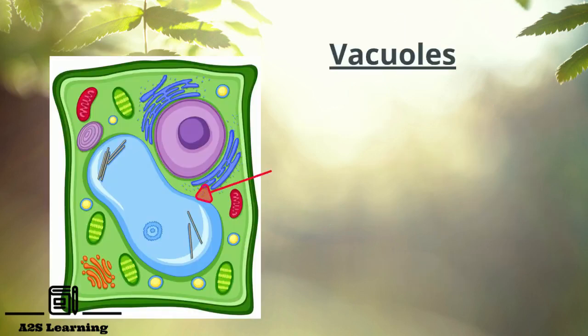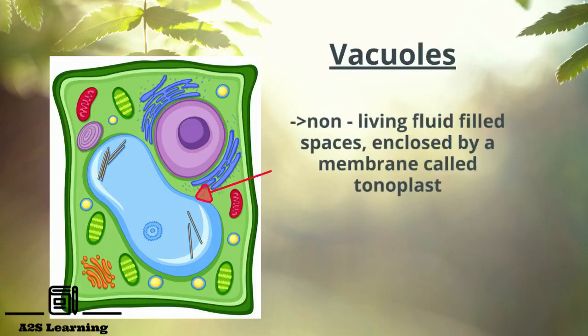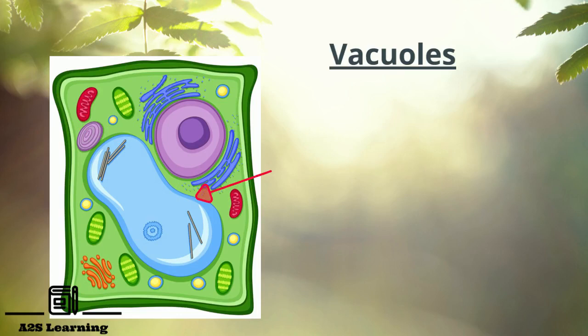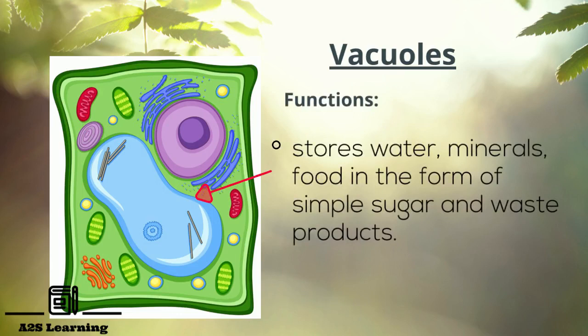Vacuoles: Vacuoles are non-living fluid filled spaces enclosed by a membrane called tonoplast. Generally, they are found in plant cells. If present in animal cells, they are very small and temporary. Vacuoles store water, minerals, food in the form of simple sugar and waste products.